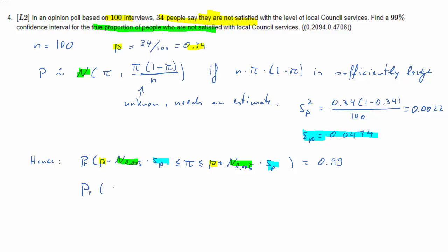Plugging in all these values, we get our confidence interval. There's a 99% probability that the unknown population proportion is between about 21% and 47%.